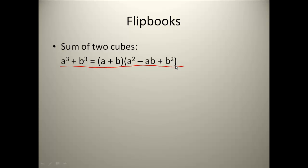Once you get that formula down, go ahead and put the following example above it. We're going to take 125 + 8x³. Just like with all the other examples we've done, we are going to break this down so that it looks like a³, meaning I'm going to have to write it as some quantity cubed plus another quantity cubed.